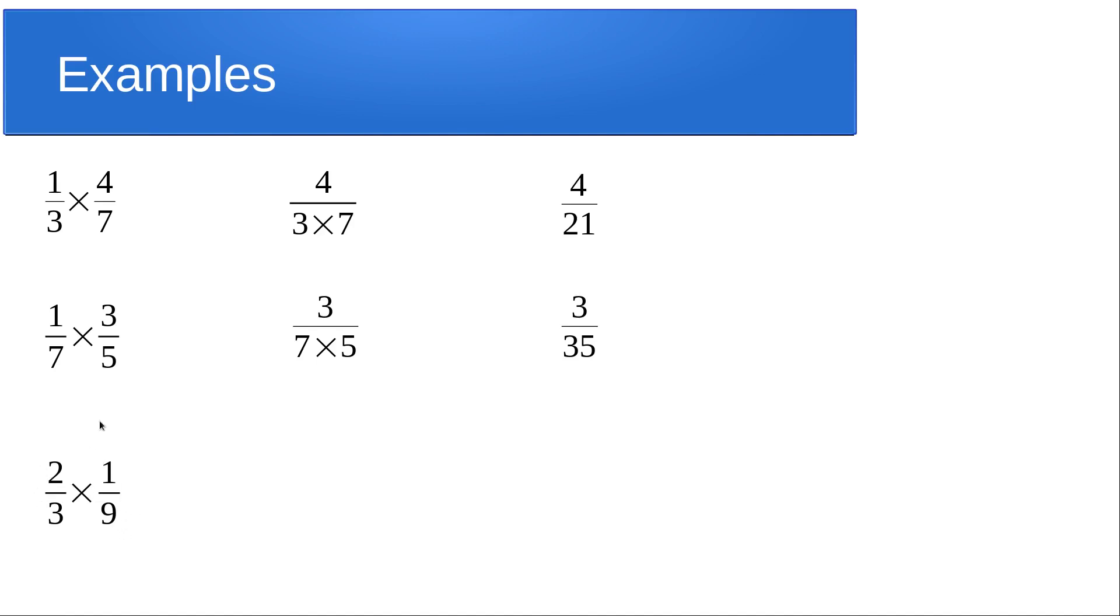Now this time I've just written it the other way around, doesn't make any difference. The top's just going to be the two, we only multiply the denominator and three times nine is 27, so there's our answer.